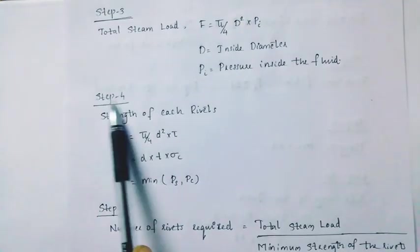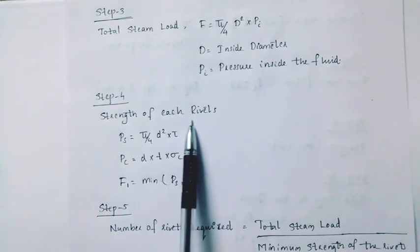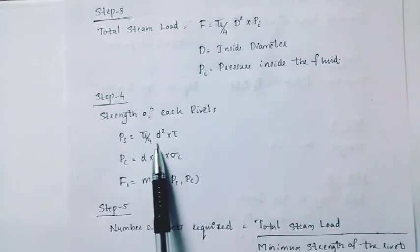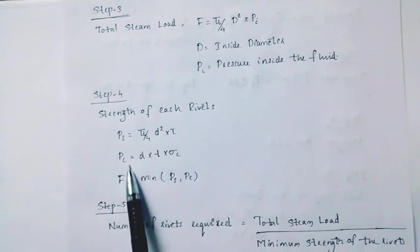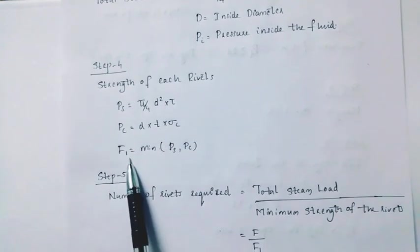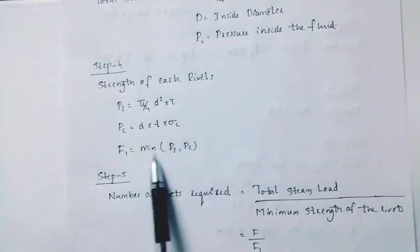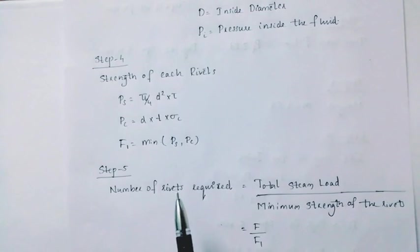Then next, Step 4. The strength of each rivet. ps is equal to pi by 4 d square, pc is equal to d into t into sigma. Then we have two values, and we have a minimum of ps, pc.